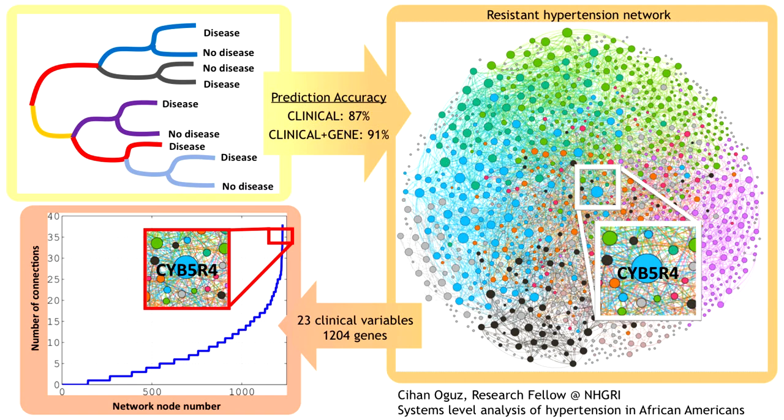Using data from two-thirds of the samples, these thresholds are optimized by creating the optimal separation between healthy and diseased patients.